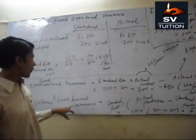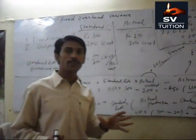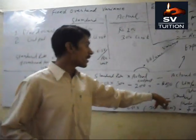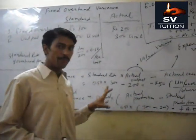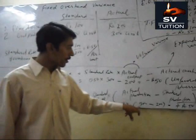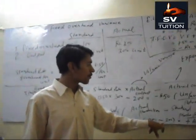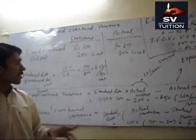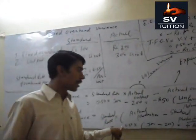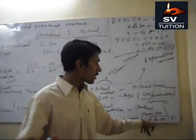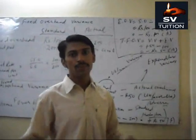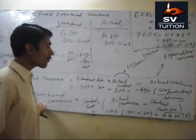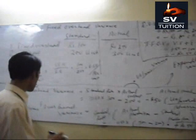Volume variance is the difference between actual production and standard production, multiplied by the standard rate. Our actual production is 300 and standard production is 200; the difference is 100. Multiplied by 50 paisa, we get 50 paisa — a favorable volume variance. This means our efficiency is good.